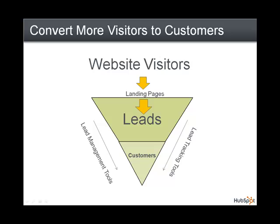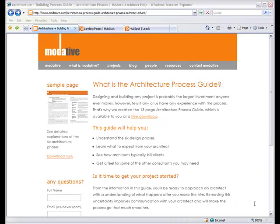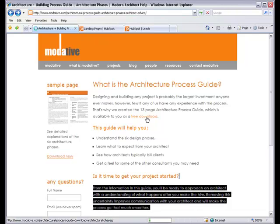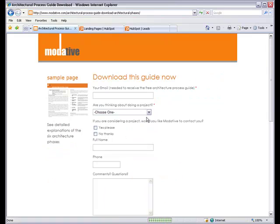Landing pages are the starting point of this funnel. Those are the pages where customers provide you with some information about their interests and their needs, and they're the pages where your website visitors become leads. The site you're looking at now is the site for Modative, a Los Angeles-based architecture firm and a HubSpot customer. You can see that when I click on this call to action here, I end up on a page where I'm able to request more information about Modative. This is a landing page. When I submit my information here, I become a lead for Modative.